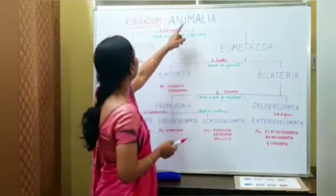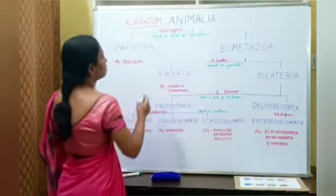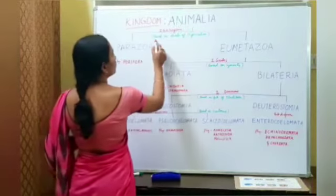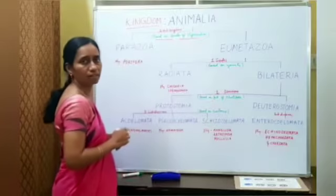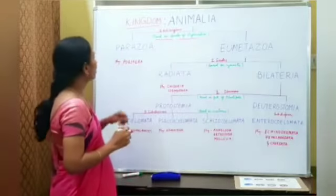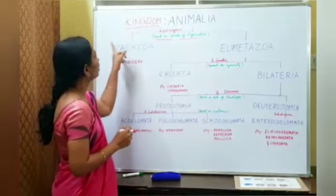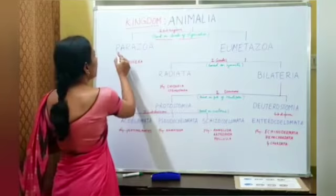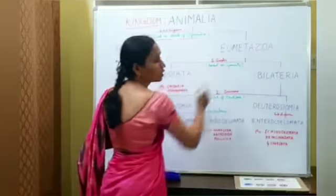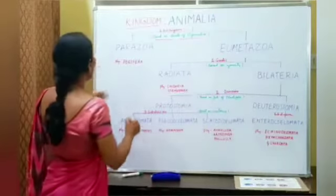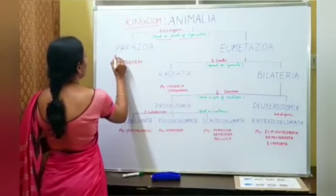Animalia Kingdom is divided into two sub-kingdoms based on the levels of organization. These two sub-kingdoms are Parazoa and Eumetazoa. Parazoa means there are no tissues.